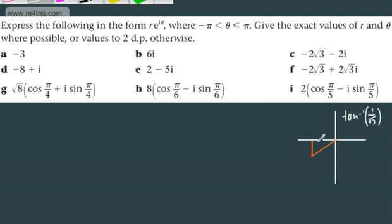So the tan is going to be 1 over √3, which means that's π/6. So all I'm going to do is -π plus now this value right here, which is going to be π/6. So we can see that θ is going to be -5π/6.